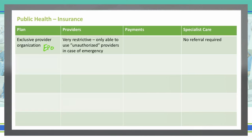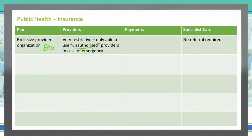EPOs are health insurance plans that allow you to get healthcare services from specific doctors, hospitals, or other care providers that are in that particular network. It's only for authorized providers. If you seek treatment with unauthorized providers, unless it's an emergency situation, they will not cover it at all.